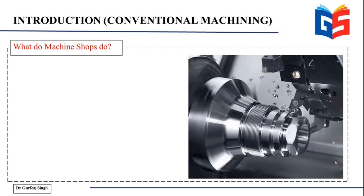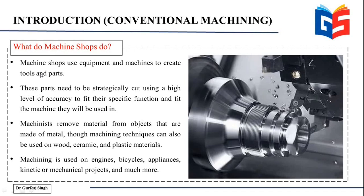What do machine shops normally do? Machine shops are found in any manufacturing facility. They are used to create tools and parts — they use different equipment to create certain tools or parts which are used in other machines. These parts need to be strategically cut using a higher level of accuracy to fit their specific function and fit the machine they will be used in, because they need to fit another assembly and match within that family of other parts.